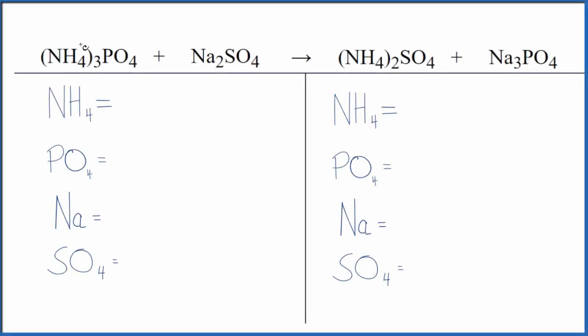So let's balance this equation. We have ammonium phosphate and sodium sulfate. This is a double displacement reaction. So we're going to do two things. One, we'll use a trick to make the balancing a lot easier, and then we'll talk about whether this reaction even takes place. So let's first balance the equation.